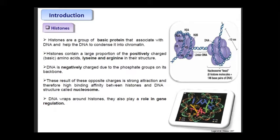Histones contain a large proportion of positively charged basic amino acids, namely lysine and arginine, which make up a large proportion of their structure. DNA is negatively charged due to the phosphate group on its backbone, so it interacts with histone proteins. These opposite charges are strongly attracted towards each other, resulting in high binding affinity between histones and DNA structure, forming a structure called a nucleosome.